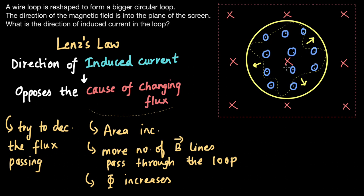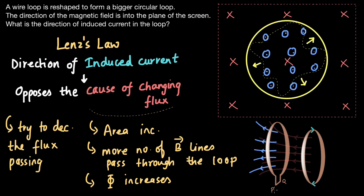It is interesting that in this case the field lines produced are opposite to the field lines that were present initially — those red lines pointing into the plane of the screen. This is unlike the previous case, where the magnetic field lines produced by the coil were in the same direction as the existing field. In the previous case, the coil was trying to oppose the decreasing flux by increasing it, so the field lines produced were in the same direction. Here, the field lines oppose the increasing flux by pointing outside the plane of the screen. The induced field lines can be in the same direction or opposite, but they must always oppose the changing flux.